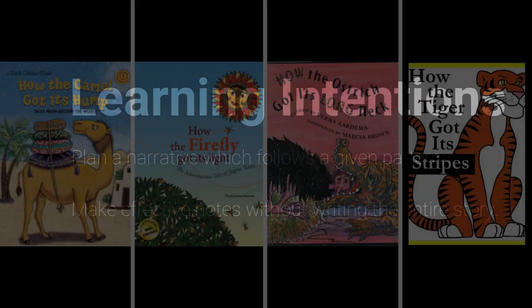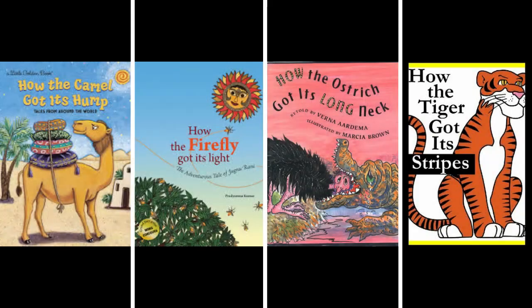So what kind of a story are we writing? Have you ever heard a story about how the something got the something? For example, how the camel got its hump, or how the firefly got its light, how the ostrich got its long neck, or how the tiger got its stripes.